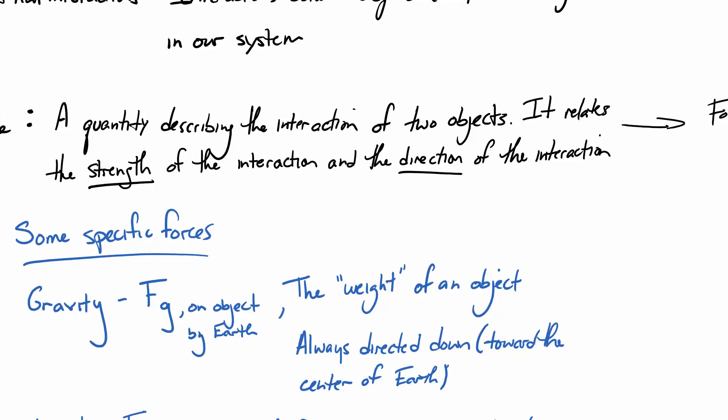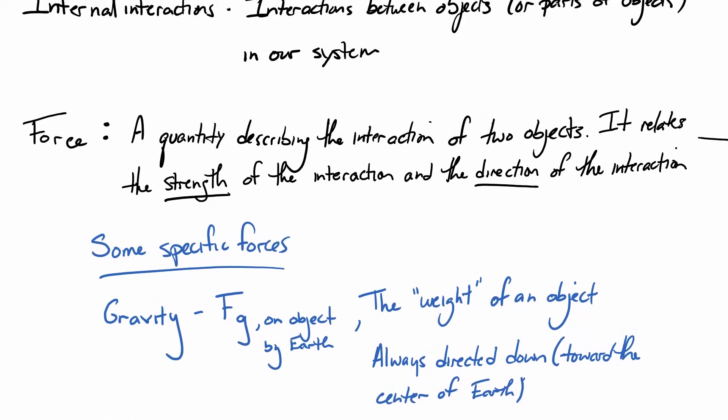Now, there are some specific forces that we want to consider. First, the force of gravity, Fg. Every force is between two objects. So, that's this whole on object, by object nonsense we got going on here. It's always an interaction. So, gravity is the force on an object by Earth. It's the weight of an object. And it's always directed down, specifically towards the center of Earth. The reason we're pulling out these specific forces is because some of them we're going to have models for in terms of their magnitude. Some of them we're going to have information about in terms of their direction. Right now, the direction is what we're focusing in on. So, gravity is always going to be down.